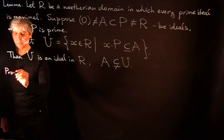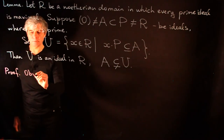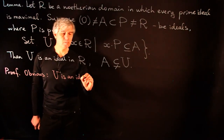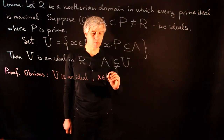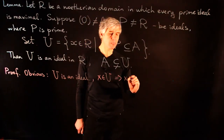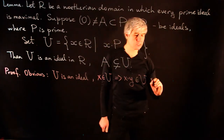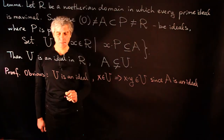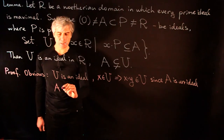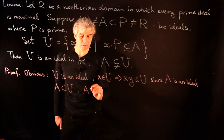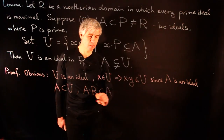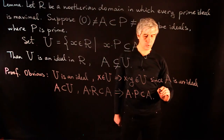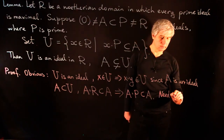Then U is an ideal in R and A is inside U but A ≠ U. Let's give a proof. It is obvious that U is an ideal: if x belongs to U then x·y also belongs to U since A is an ideal. It is also obvious that A ⊆ U since A·R ⊆ A, which implies A·P ⊆ A.